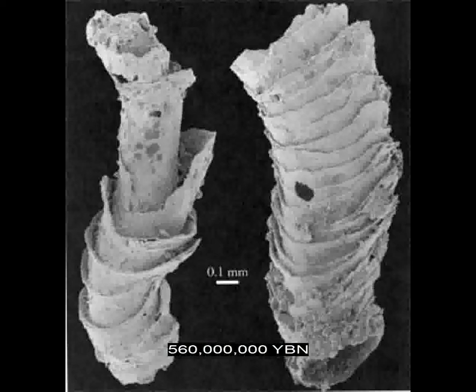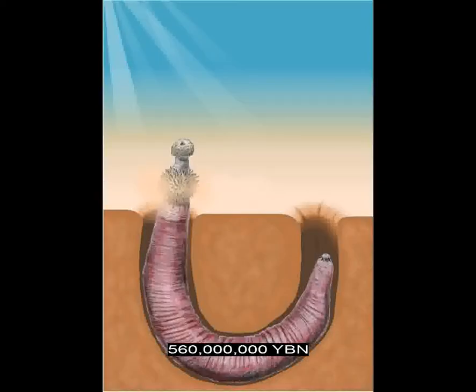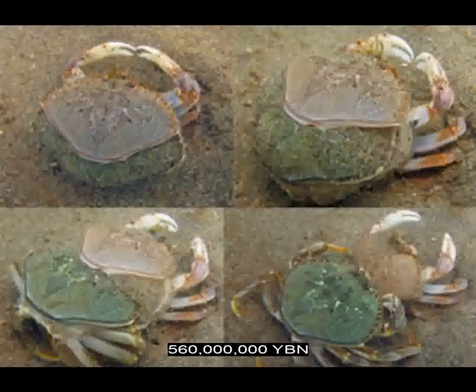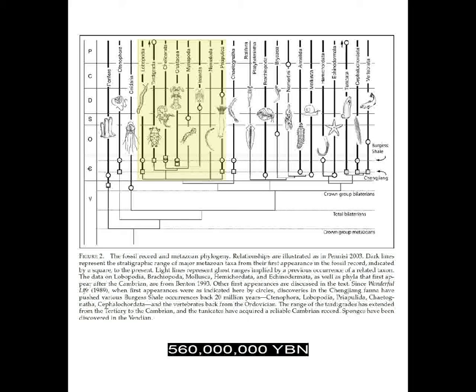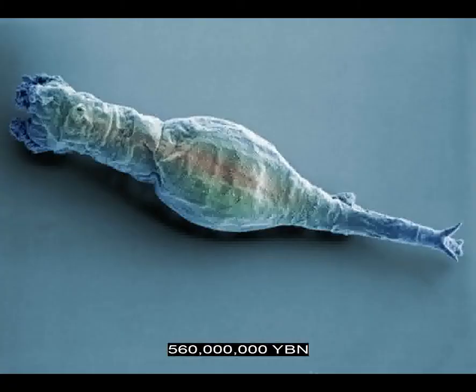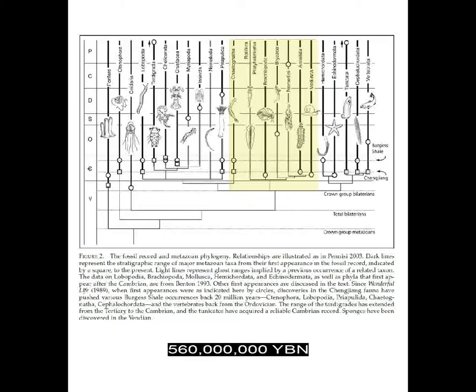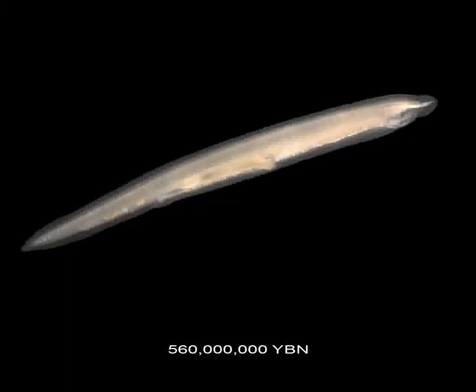The protostomes Ecdysozoa evolve—animals that molt, losing their outer skin as they grow. This is the ancestor of roundworms and arthropods, which includes insects and crustaceans. The protostomes Lophotrochozoa evolve—ancestor of rotifers, phoronids, brachiopods, entoprocts, bryozoans, platyhelminthes, gastrotrichs, nemertia, mollusks, and annelids. The first fish evolves. The earliest extant fish, the chordates lancelets—also called amphioxus. This is also the first liver and kidney. Lancelets are the most primitive chordates to have a liver and a kidney, which are not found in hemichordates or tunicates.